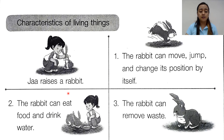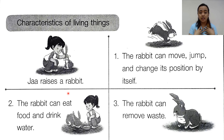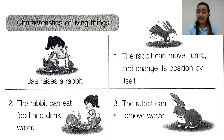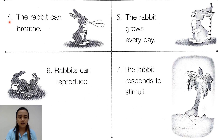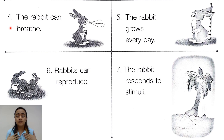Second, the rabbit can eat food and drink water. Of course, like us, we can eat food and drink water. Third, the rabbit can remove waste, and like us humans, we can remove our waste. Fourth, the rabbit can breathe, and like us humans, we can breathe. That's why we need air.